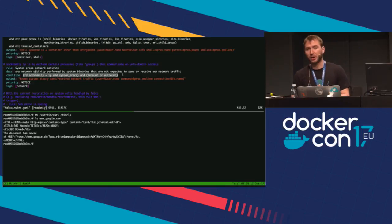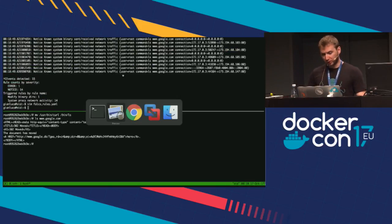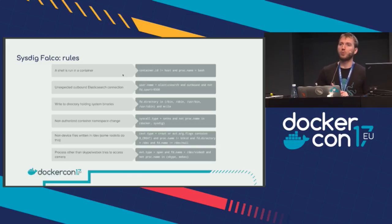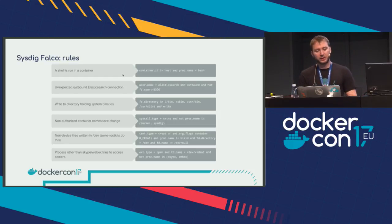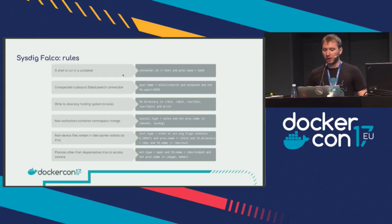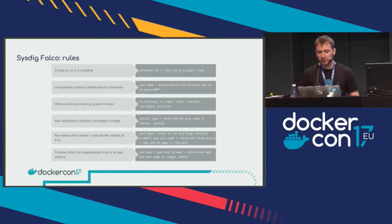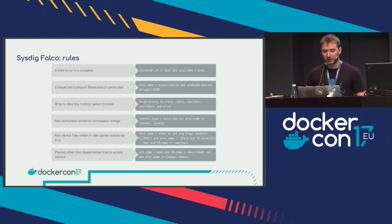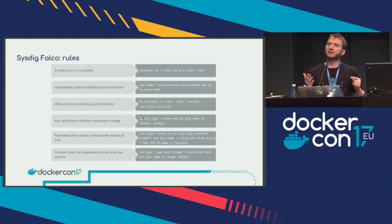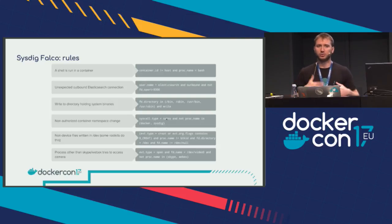Falco ships tons of rules by default. We have advanced users who completely redefine their own for very large infrastructure, and we know this works well at scale. Examples of bad behavior you might want to get alerted on: a shell run in a container, your Elasticsearch container doing outgoing network activity on a weird port, a file written under the system binaries directory, or someone executing something inside a container detected via a certain system call that allows crossing namespace boundaries.